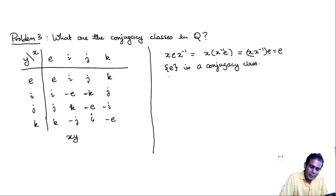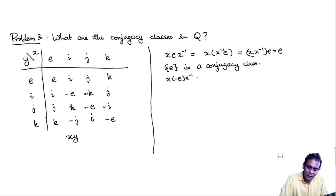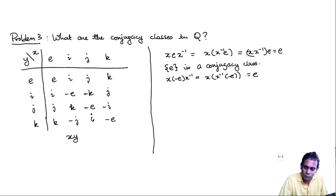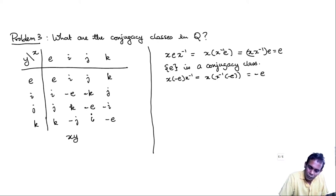The same works with -e. x·(-e)·x⁻¹: since -e is the negative of the identity matrix, it commutes with all other matrices under matrix multiplication. So x·(-e)·x⁻¹ = x·x⁻¹·(-e) = -e. Therefore {-e} is also a singleton conjugacy class.